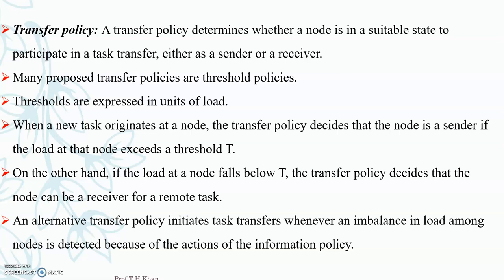We are in a distributed scheduler and what we are scheduling here is load distribution — which node has what type of load. Depending upon the load, if a node has load above the threshold T, then that node is the sender. And if a node falls below the threshold T, then it is a receiver. Below means it has less load and above means it has more load. This is how we decide who is the sender and who is the receiver. The receiver has less load and can take more; the sender has load beyond its threshold. An alternative transfer policy initiates task transfer whenever an imbalance in load among nodes is detected, based on the action of the information policy.